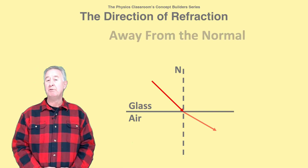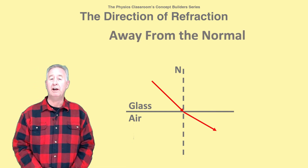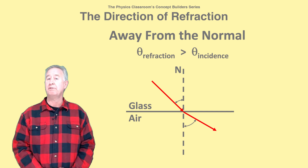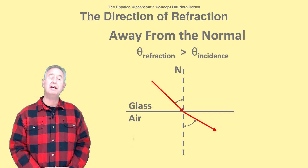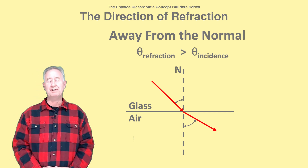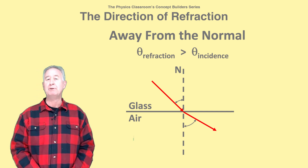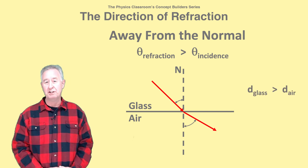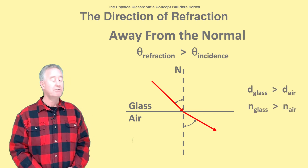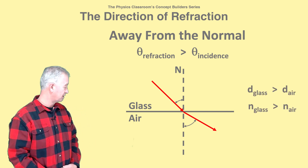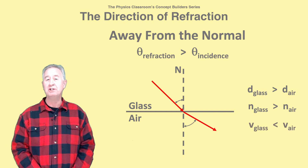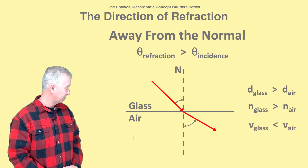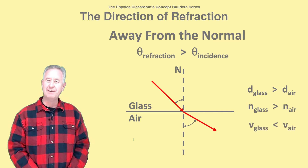The light ray refracts away from the normal line. That is, the refracted ray is farther from the normal line than the incident ray is. This happens for light passing from a more dense medium to a less dense medium, from a high index medium to a low index medium, or changes its speed from slow to fast.